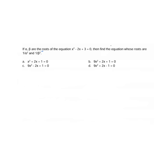Alpha and beta are the two roots of the equation x squared minus 2x plus 3 equals 0. Find the equation whose roots are 1 by alpha squared and 1 by beta squared. The given equation is x squared minus 2x plus 3 equals 0. Comparing this with ax squared plus bx plus c equals 0, the value of a will be 1, b will be minus 2, and c will be 3.